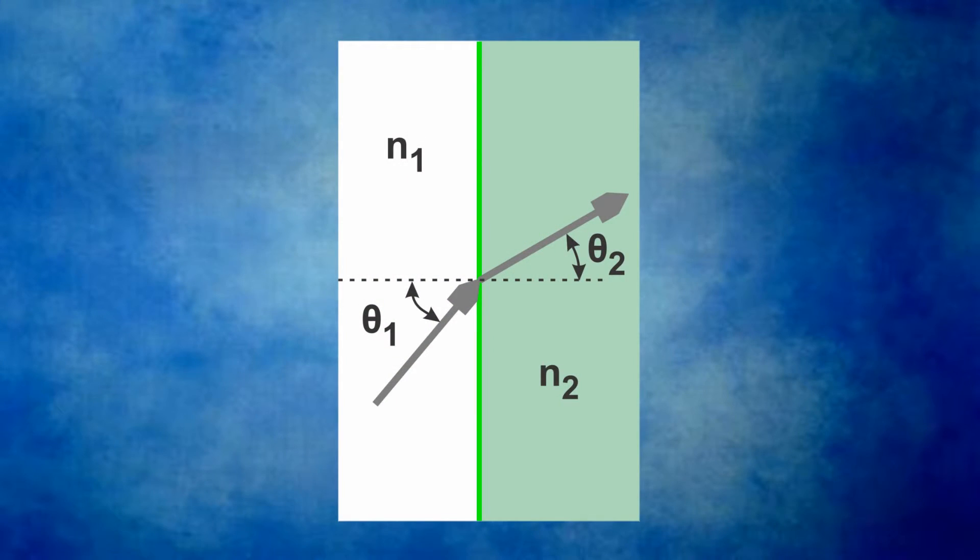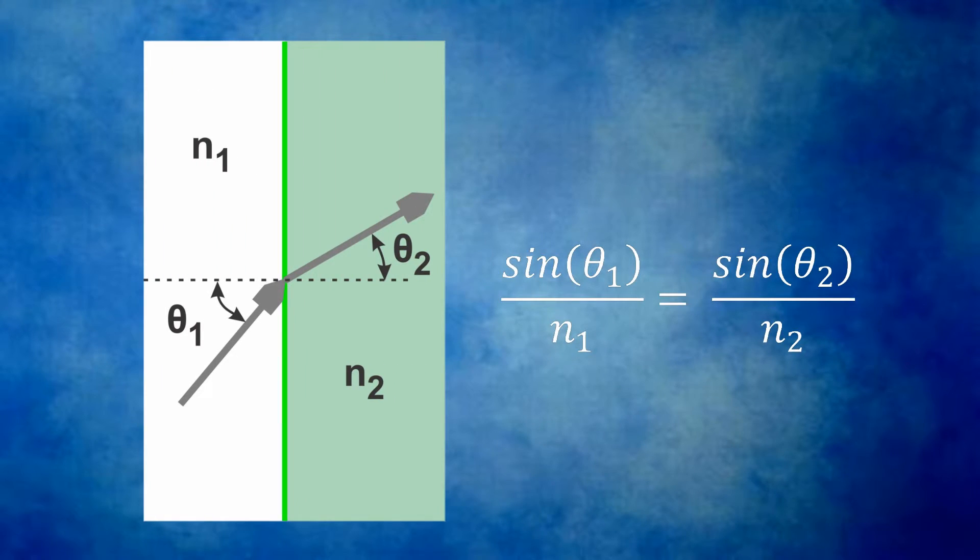There's a simple relationship, known as Snell's Law, that can be used to calculate how much light will refract. Now, the good news is you don't need to memorize this formula because we just don't use it in machine vision. It's just important to know that, yes, it is possible to model optical systems and the refraction in them.